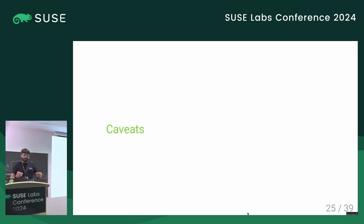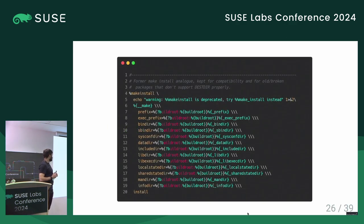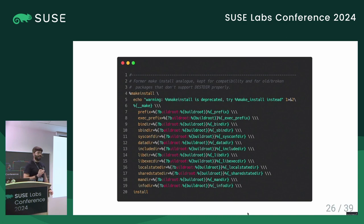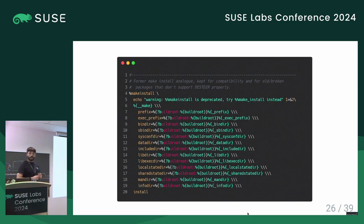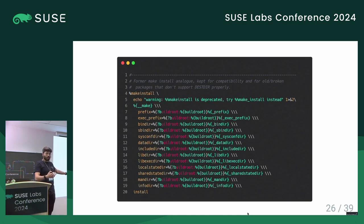Now let's go over the caveats. First, there is a 'make_install' macro that's still installed on our systems for compatibility even though it's no longer used. When macros need updating, we have two choices: update the macro itself or add a new macro. With make install, 'make_install' and 'make-install' (with a dash) are completely different macros. By adding a new macro rather than changing the old one, we avoided updating all packages at once and could migrate step-by-step in a proper manner.